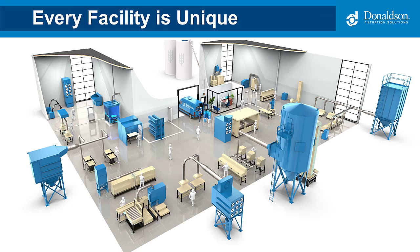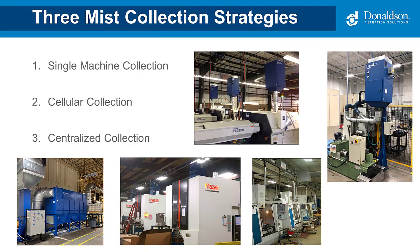One of the interesting things about this job is just how unique every project is — the parts being manufactured, types of materials, processes, and machines all vary, bringing different variables and challenges. That is why there is not one solution that fits all. When evaluating mist collection for your facility, you need to consider the plant layout and how that impacts your use of mist collectors. There are generally three strategies to consider: singular machine collection with one mist collector per machine; the cellular approach grouping a series of machines to a collector based on a product line; and the centralized collection approach, which is a whole-plant approach using a single machine.